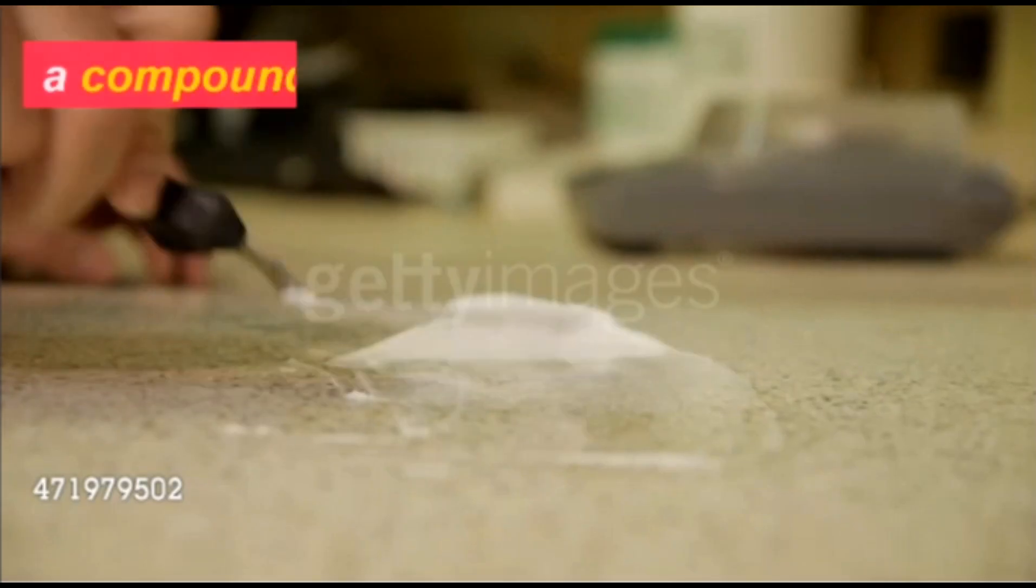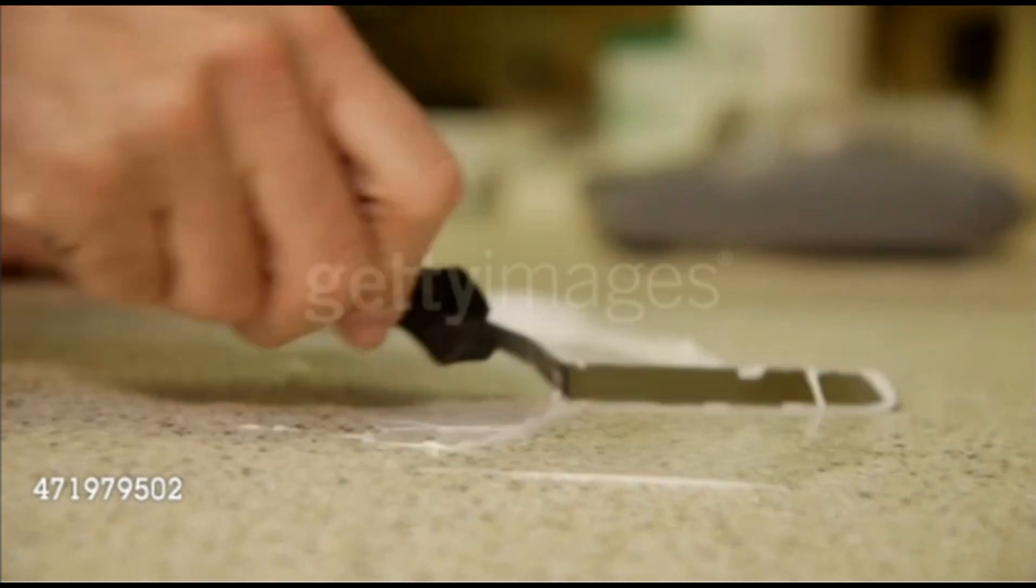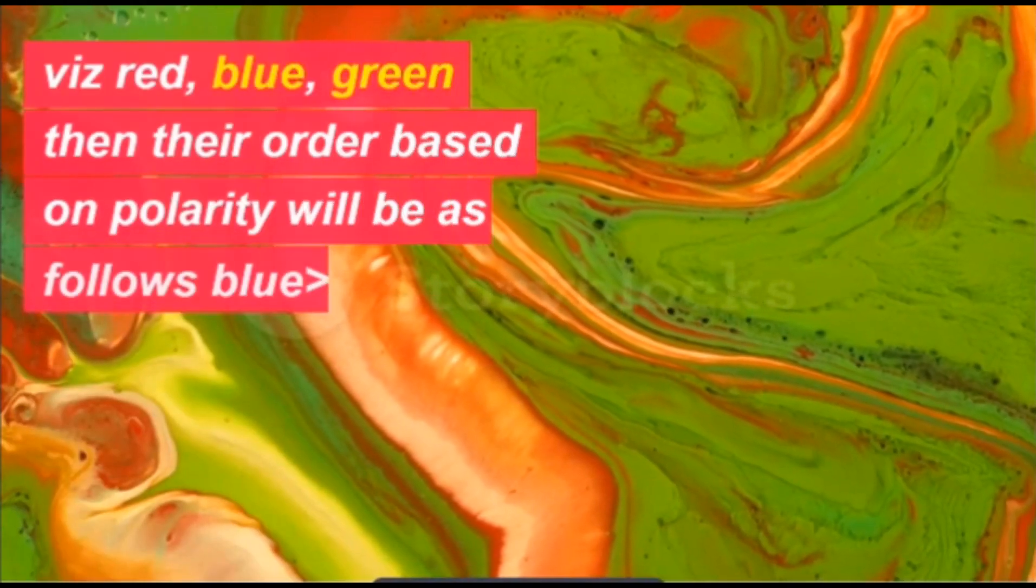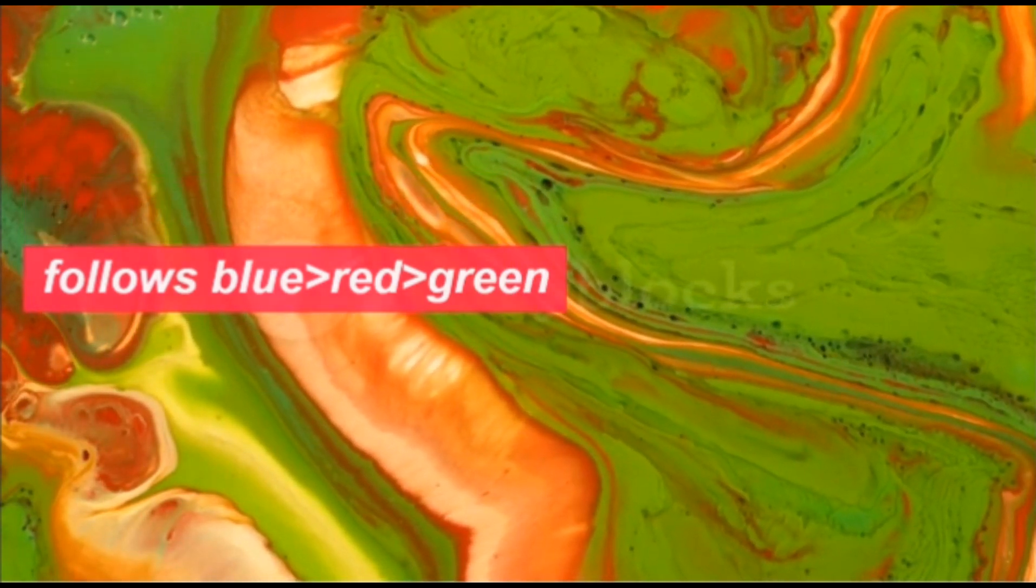For example, a compound mixture consists of three different compounds: red, blue, and green. Their order based on polarity will be as follows: blue greater than red greater than green.